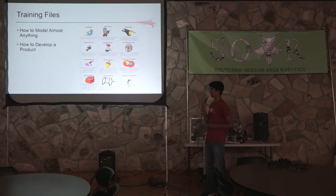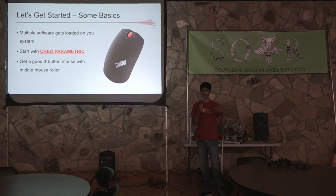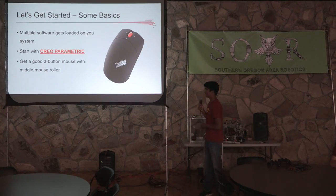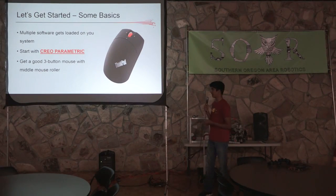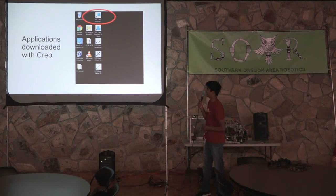You can also use 'How to Develop a Product,' which is a tutorial showing you how to go from concept design to a final product. When you download Creo, there are several applications: Creo Direct, Creo Analysis. But the one you're going to be using is Creo Parametric — that's where you do all the 3D modeling. You're also going to want a good three-button mouse where the scroll wheel also acts as a pressable button, because you need both functions to manipulate your models.